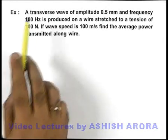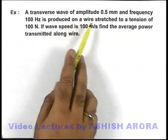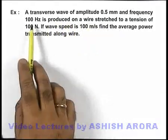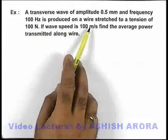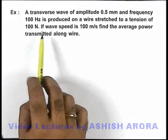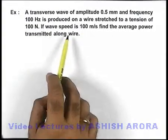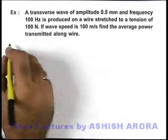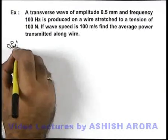In this example we are given that a transverse wave of amplitude 0.5 mm and frequency 100 Hz is produced on a wire stretched to a tension of 100 N. If wave speed is 100 m/s, we are required to find the average power transmitted along the wire.